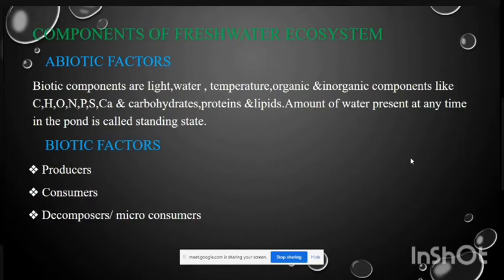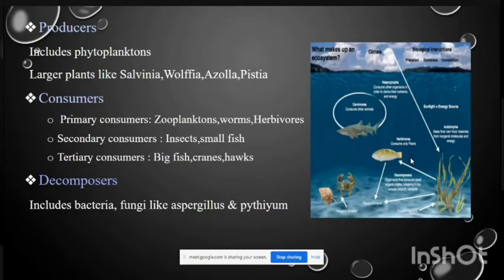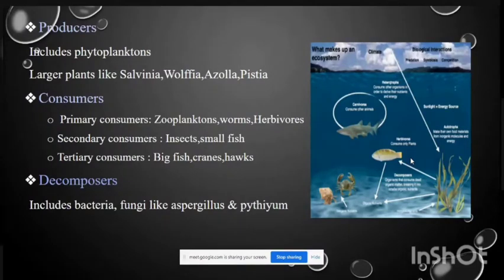Biotic factors include producers, consumers, and decomposers. Decomposers are also called micro-consumers. Producers include phytoplankton. Phytoplankton includes large plants like Salvinia, Wolffia, Azolla, and Pistia.